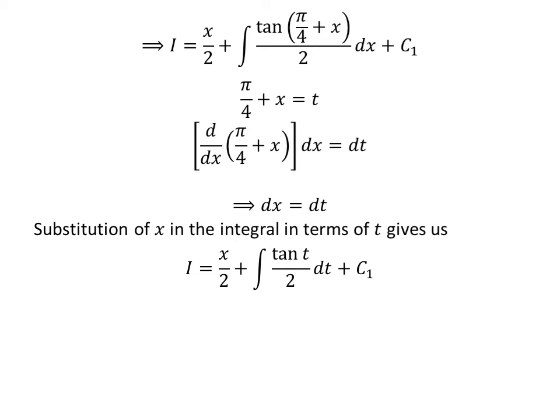Substituting pi upon 4 plus x by t and differential of x by differential of t gives us i is equal to half of x plus integral of tangent of t upon 2 with respect to t, plus capital C1. We know integral of tangent of t is minus natural log of absolute value of cosine of t. So i is equal to half of x minus natural log of absolute value of cosine of t upon 2, plus capital C1 plus capital C2.